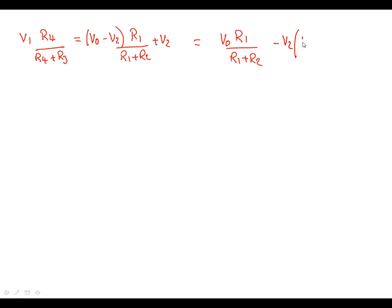So if we now go to V1 R4 over R4 plus R3 is equal to the voltage at the output minus voltage 2 multiplied by the voltage divider R1 over R1 plus R2, and then we add V2 back in again. You can see we've now got a simple expression that we need to just expand. So what we're going to do is we're going to expand these terms here, Vout and Vin. We'll leave V1 alone for the moment.